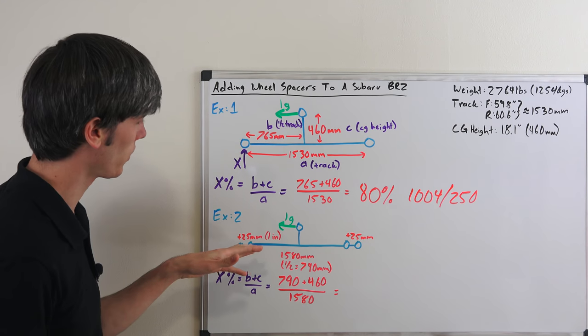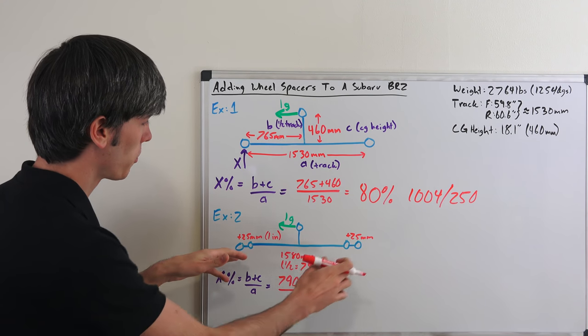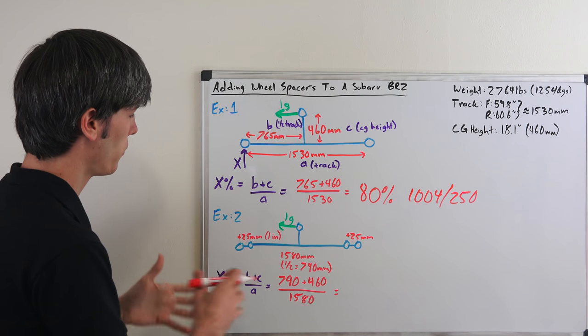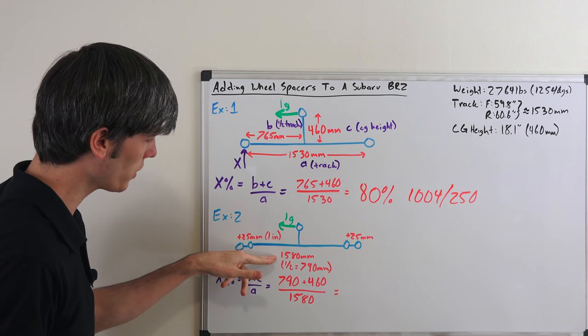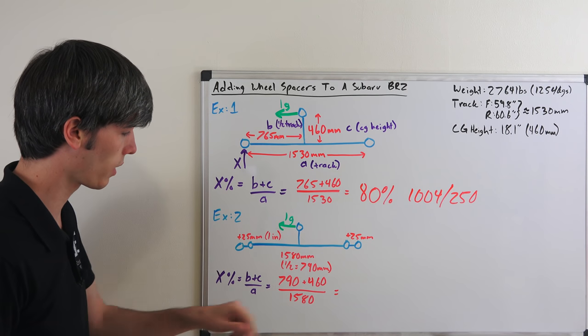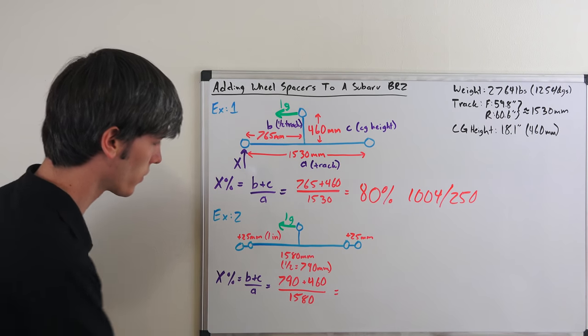Now what we're going to do is add 25 millimeter spacers and push those wheels out a little bit, so we've increased our track by 50 millimeters. So in doing this we change our math up a little bit here. We've got 790 plus 460 all divided by 1580. What does that give us?